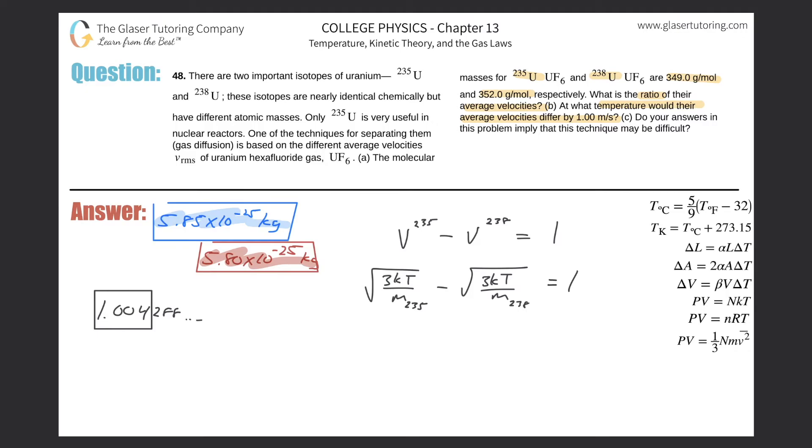So now we have square root of three K T over M minus the square root of three K T over M. This is M235, and this is M238, and that should equal one. So now we realize we have to solve this equation for T. If you notice, these two terms have common factors. We have a three K and a T, I can pull that out. So square root of three K T multiplied by one over the square root of M235 minus one over the square root of M238, and that should equal one.